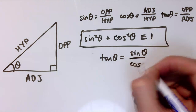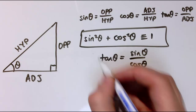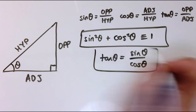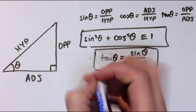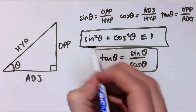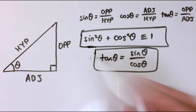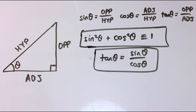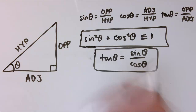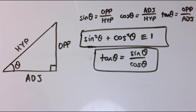So two really useful identities: sine squared plus cos squared equals one, and tan theta equals sine theta divided by cos theta. We use these all over the place when solving or dealing with equations that have trig functions in them, and there's a huge amount of maths that builds up from these that we'll look at in some other videos.